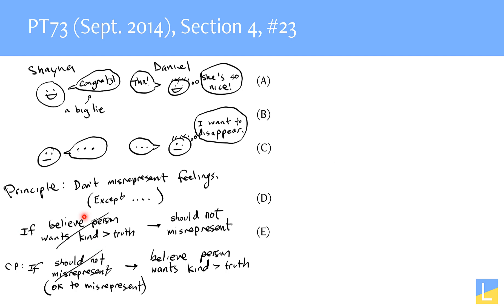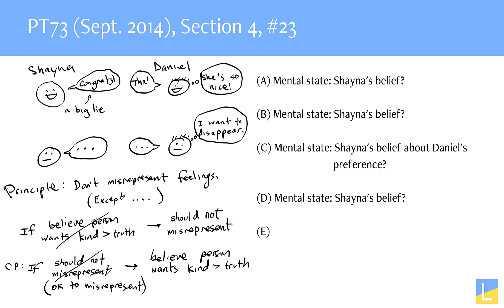The great thing about this question is if you really understood that this problem is about what Shana believes about Daniel's preference, then the first four answer choices can be gotten rid of very confidently because none of them tell us what Shana thinks about what Daniel wants. The only one that comes kind of close is answer choice C, which says that Shana believes that kindness should be preferred to dishonesty — but that's just a general statement about what Shana believes should be preferred, not a belief about what Daniel thinks. Answer choice B tells us that Daniel might prefer kindness over the truth, but it doesn't say that Shana believes that Daniel wants that.